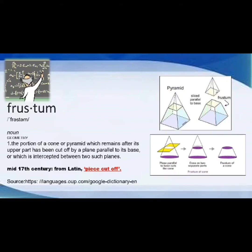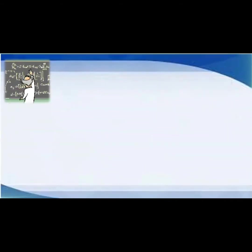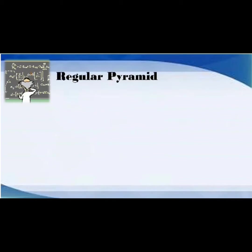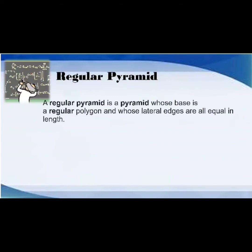As you can see in the illustration and examples. The second term is the regular pyramid. A regular pyramid is a pyramid whose base is a regular polygon and whose lateral edges are all equal, as you can see in the illustration below.